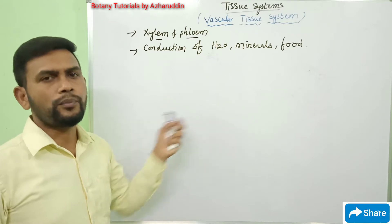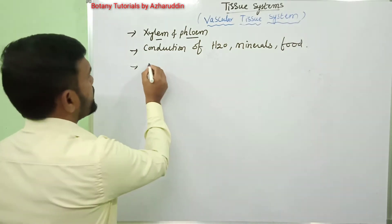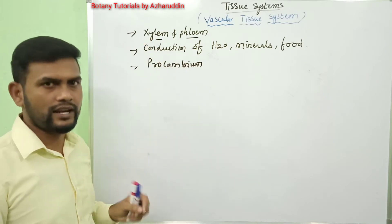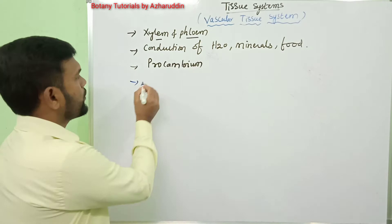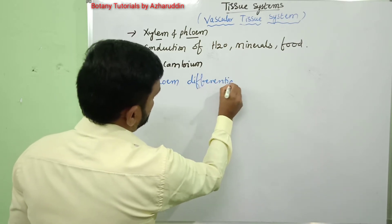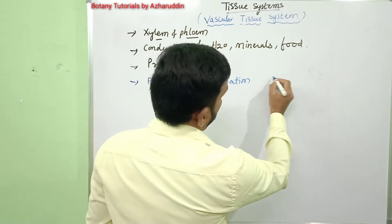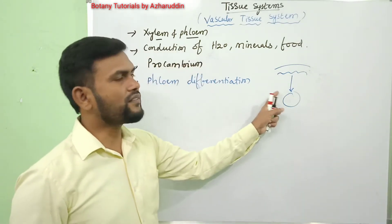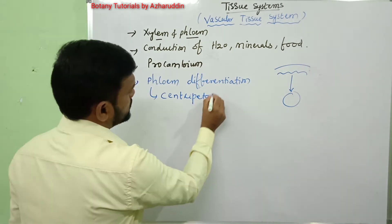Xylem and phloem originate from procambium. Phloem is differentiated earlier than xylem. During phloem differentiation, it starts from the periphery and extends up to the center. This type of growth is called centripetal growth.